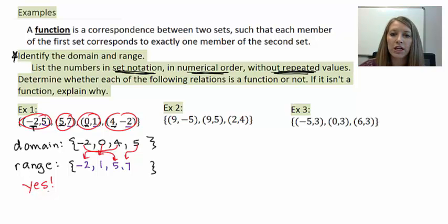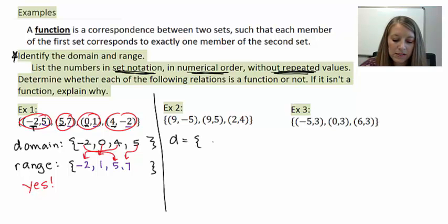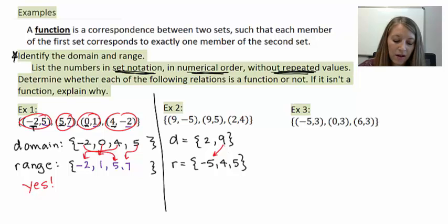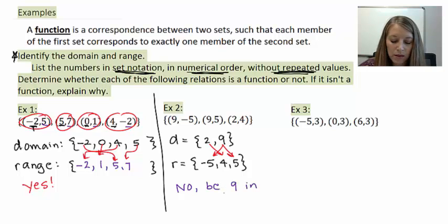Pause the video now and do the same thing for examples 2 and 3. In example two, the domain — all X values in numerical order, no repeated values — is: 2 and 9. Even though 9 is listed twice, I only list it once. The range in set notation is: negative 5, 4, and 5. The relations are: 9 goes to negative 5, 9 goes to positive 5, and 2 goes to 4. The answer is no, this is not a function, because the value 9 in the domain repeats. We cannot have repeated domain values.